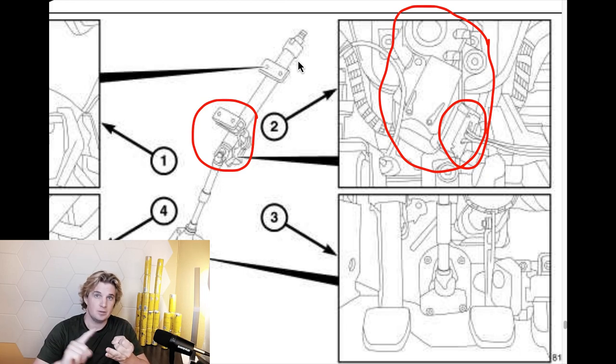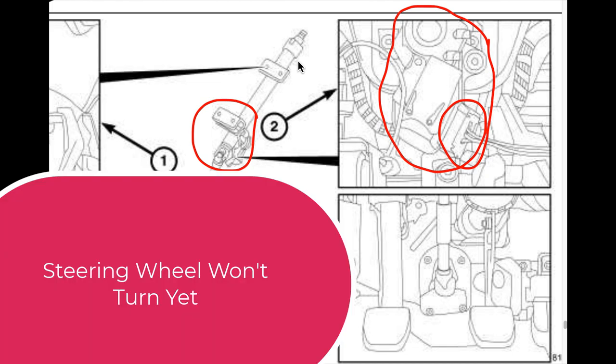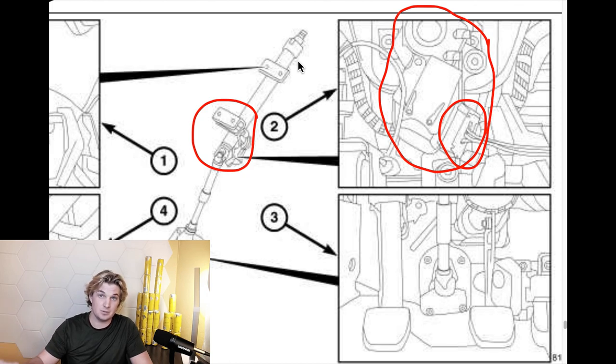So you've got your key turned, you've got the engine running, you're good. Except your steering wheel still can't turn because the steering lock is still locked, even though the immobilizer thinks it isn't. So here's where the hammer comes in.